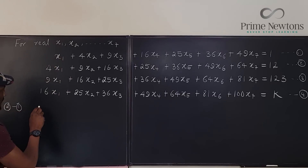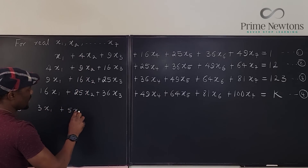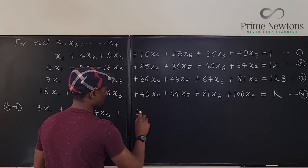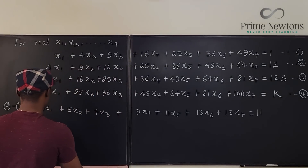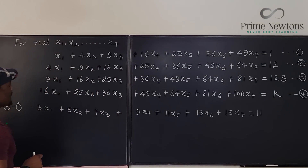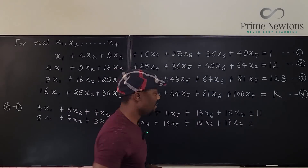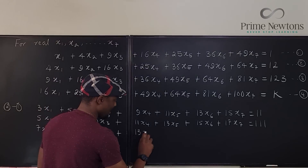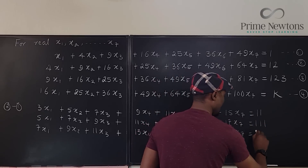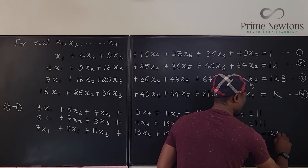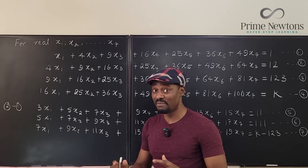Equation 2 minus equation 1 is going to give me 3x1 plus 5x2, continuing through all seven variables with the appropriate coefficient differences, up to the final term. If I do the same thing — equation 3 minus equation 2 — I get 5x1 plus 7x2, and so on through all variables with the next set of coefficient differences.